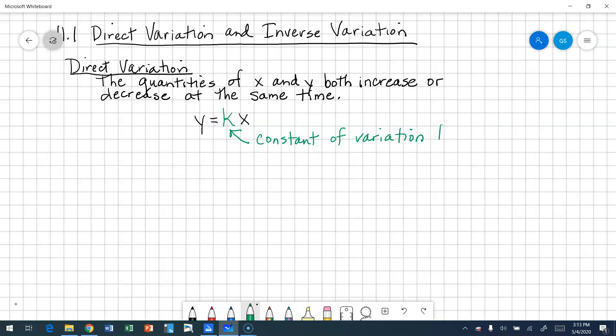In this particular equation, k cannot equal zero because then we wouldn't have an x. So we call this the constant of variation. That's staying the same.